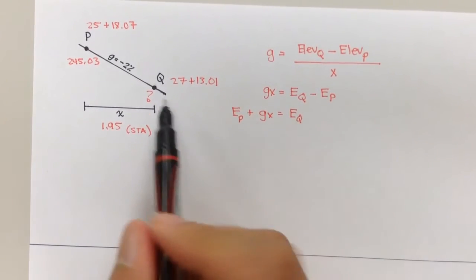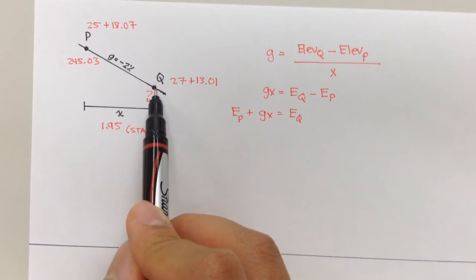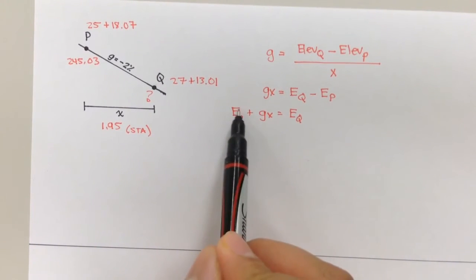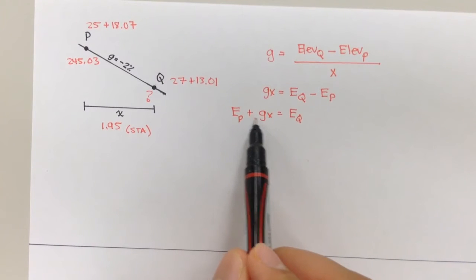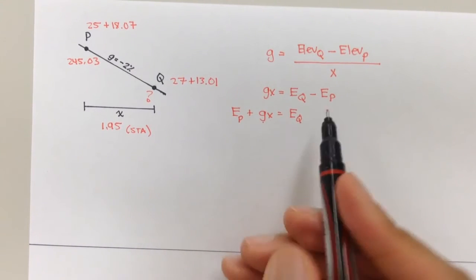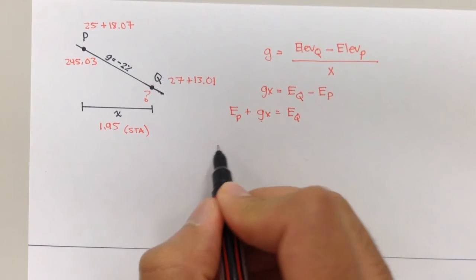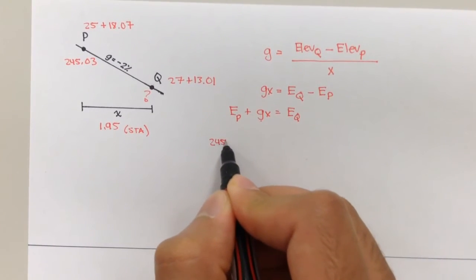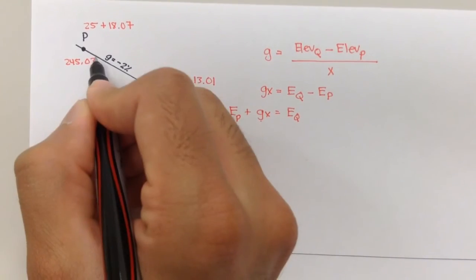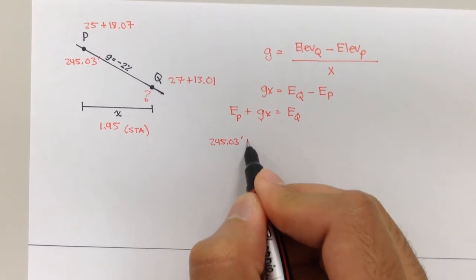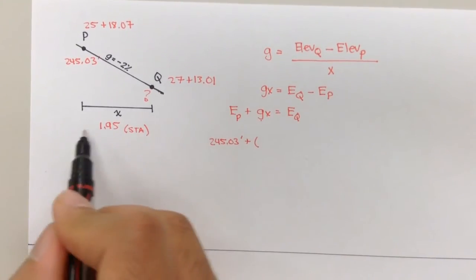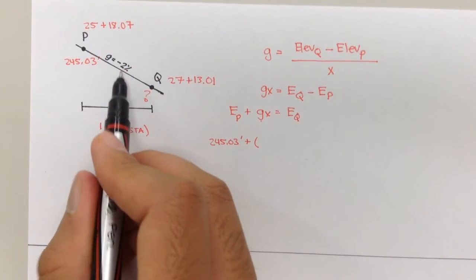This is saying the elevation at point Q is the elevation of P plus the grade times X. So if we plug this in, if we plugged in 245.03 feet, this is supposed to be in feet, plus the grade, and remember this is in stations, so we can leave it as the percent.